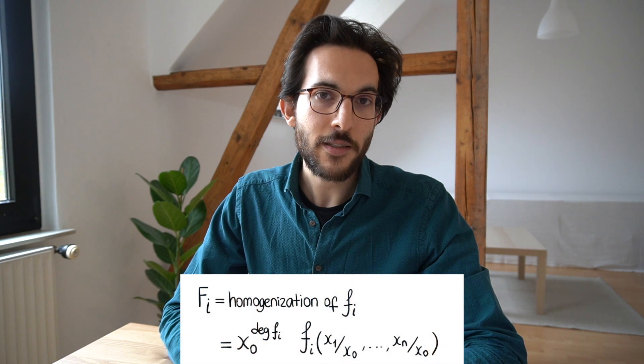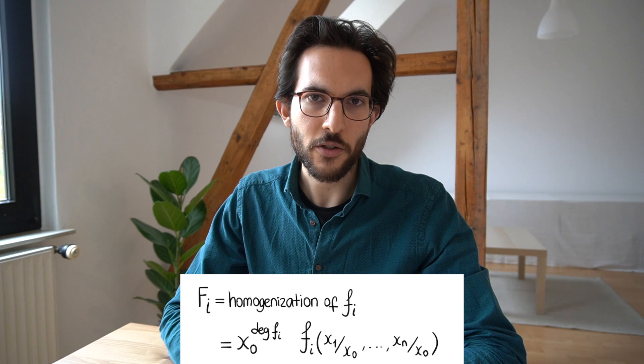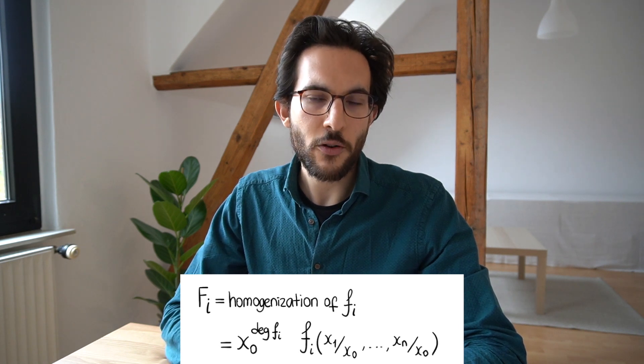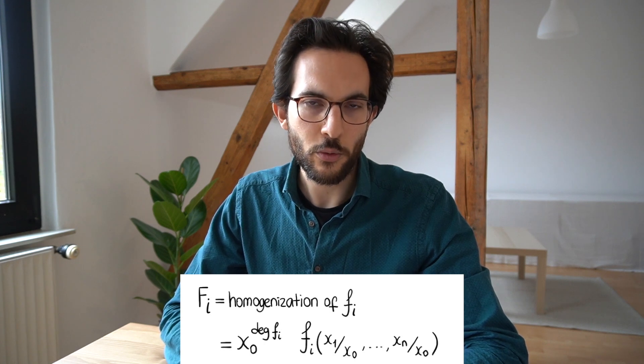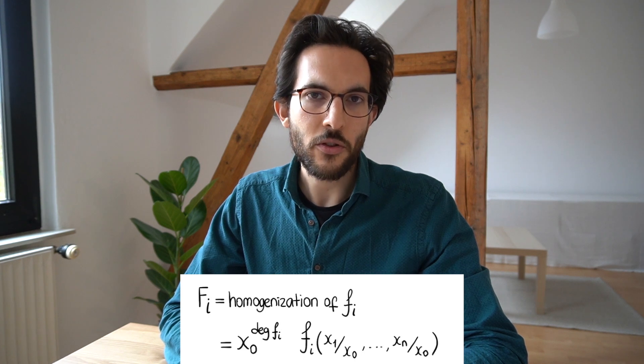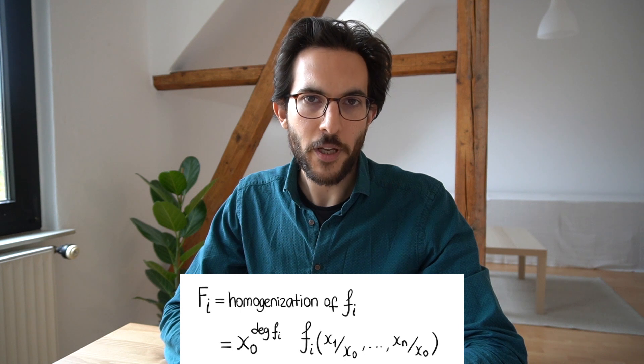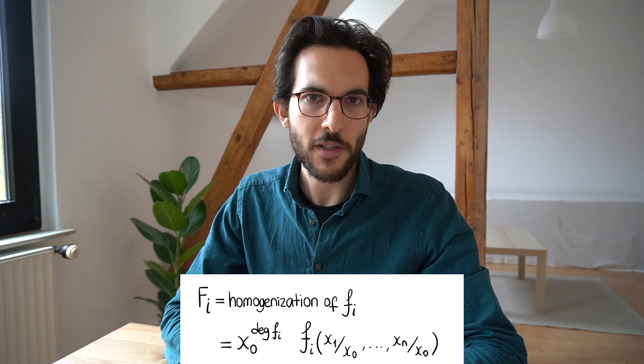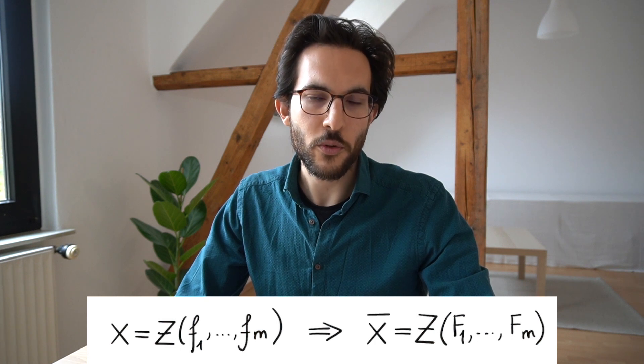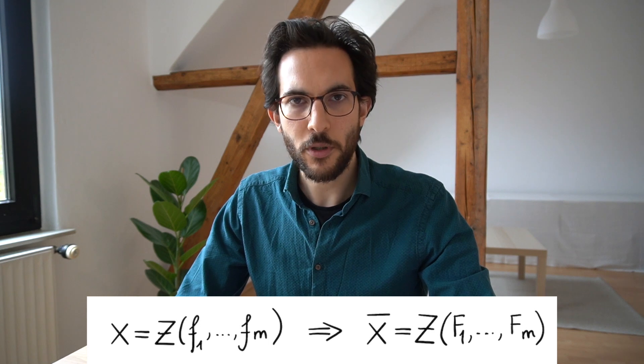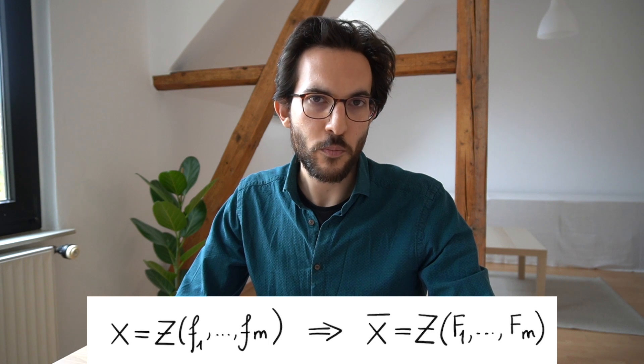We are searching for homogeneous polynomials vanishing on the closure of X. The homogenization of fᵢ is computed by replacing each xᵢ with xᵢ/x₀, then scaling the polynomial by x₀ to the power of the degree of f. When expanded, the fractional terms in x₀ cancel out, and each monomial becomes degree equal to the original degree of f. These homogenized polynomials, call them capital Fᵢ, will vanish on the closure and restrict back to the original fᵢ.